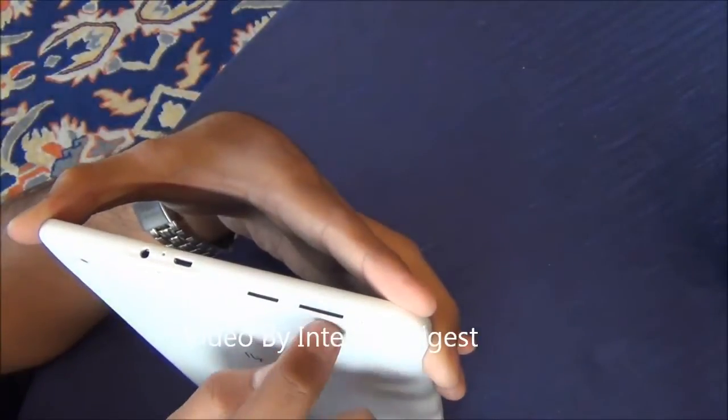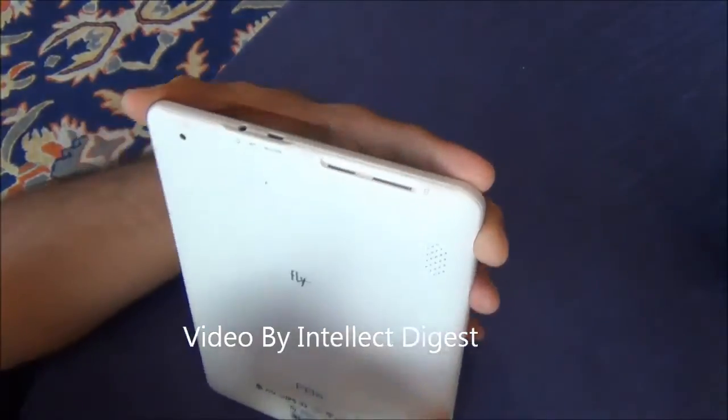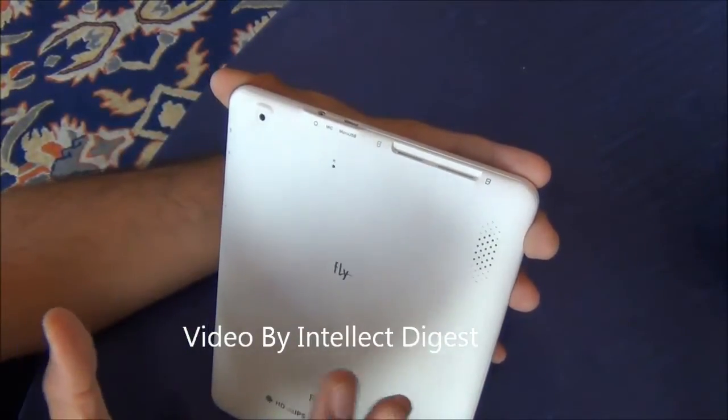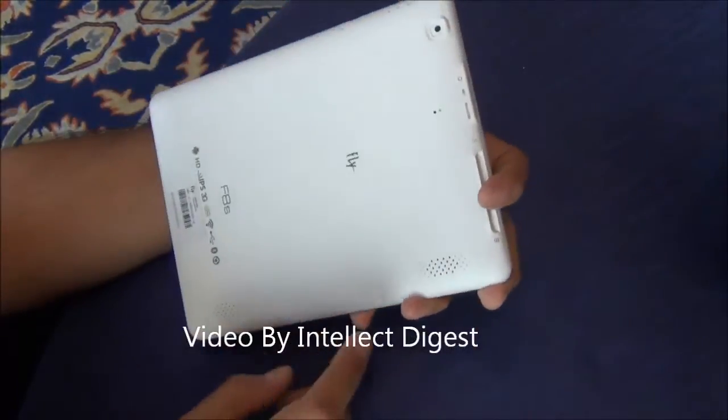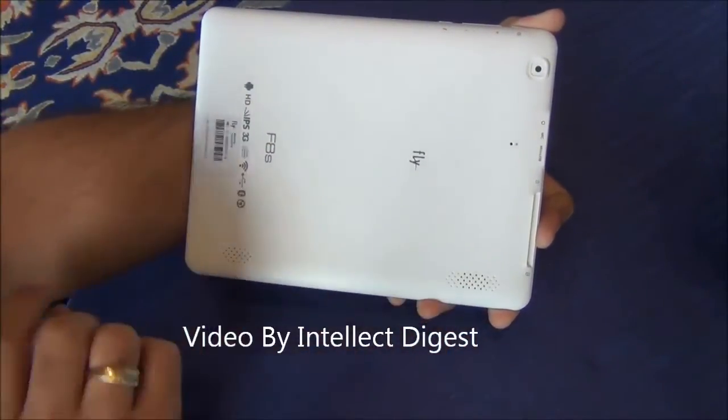Here you can add a SIM card which can be a 3G SIM card. So it has inbuilt 3G functionality. You need not carry a dongle or any other external device. You can just put your 3G SIM in here and start using 3G. There are dual speakers here for stereo output, one here and one here.